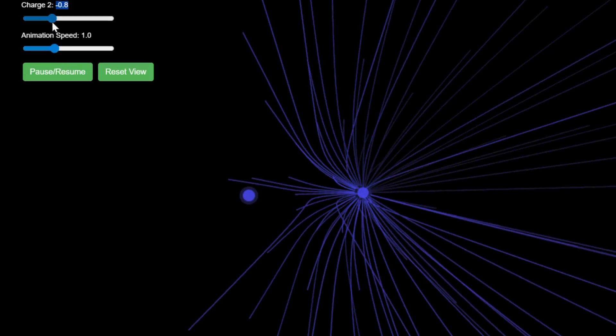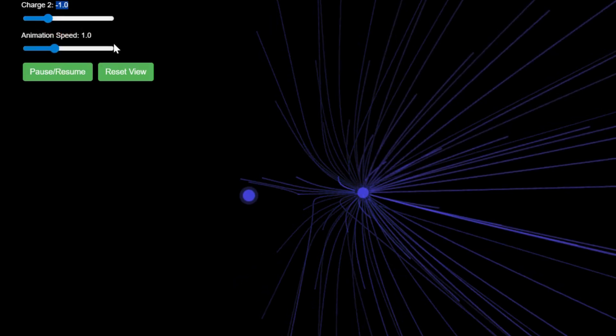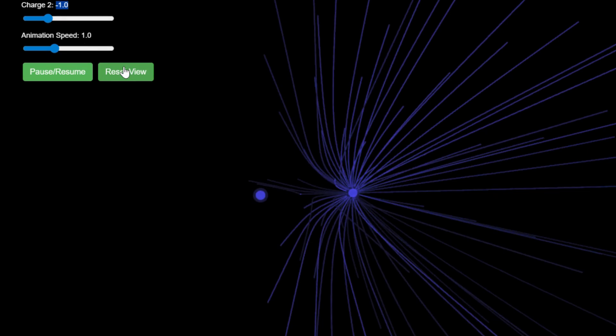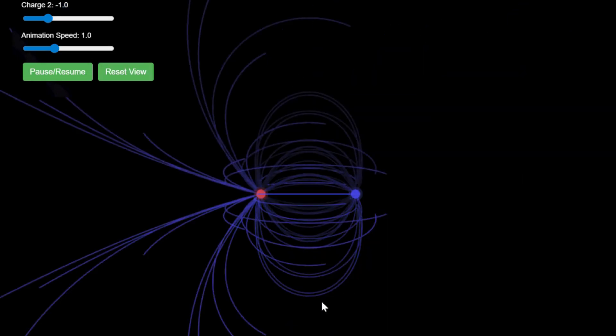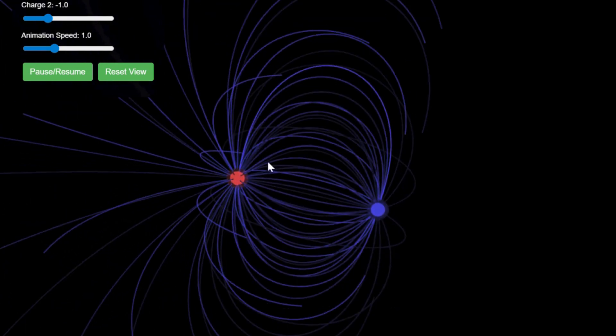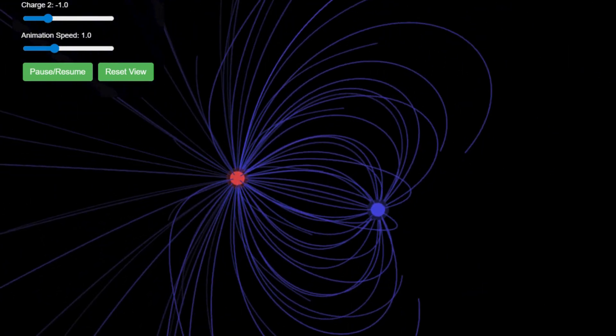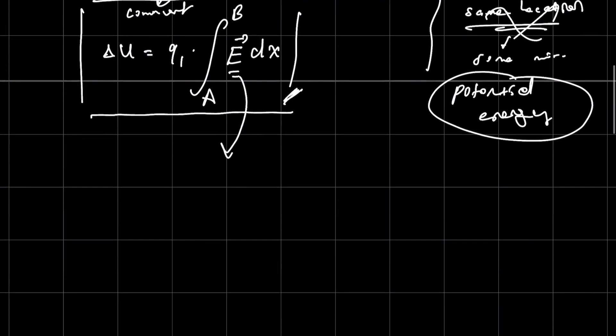When we number the electric field lines, we see that the field is essentially the sum of these lines. Just as we calculate the area of a rectangle by multiplying its length and width, the electric field can be seen as being composed of these lines. This approach reminds us of the principle of superposition.